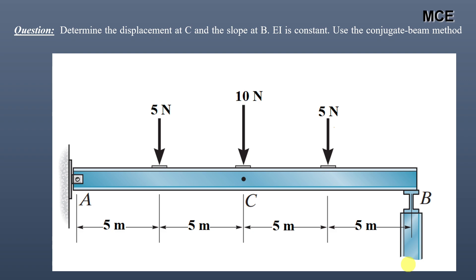Hello and welcome back to Master Civil Engineering. In this video we will learn how to find the slope and displacement in a beam using the conjugate beam method. I have already solved one beginner question on this method, and this is a slightly advanced question. We have to find the displacement at point C and the slope at point B, assuming EI is constant. We have a simply supported beam with a pin at A and roller at B, with three concentrated loads — two of 5 N and one of 10 N — over a total span of 20 meters.